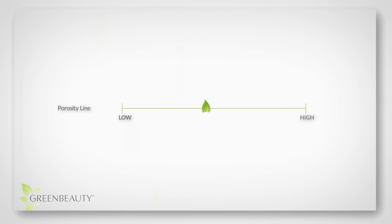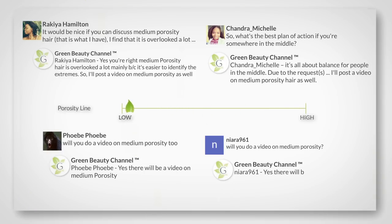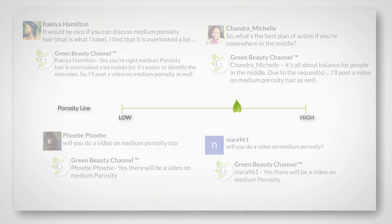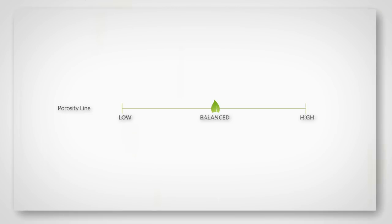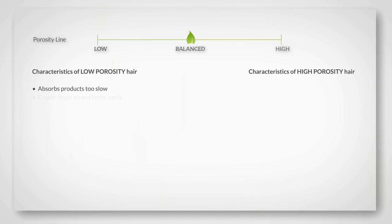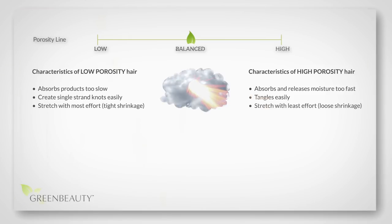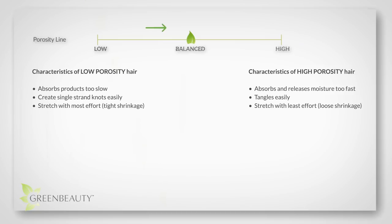When we talk about porosity, we tend to focus on extremes. But according to a handful of comments, a lot of you notice that you fit characteristics from both the high and low porosity groups. So I think it's important to go over medium or balanced porosity hair types. For length retention, the medium section of this chart is pretty much the goal. Naturally high porosity hair types can only achieve this temporarily with a consistent regimen that helps to reinforce weak cuticles. And low porosity hair types can become medium by gradually increasing their porosity without causing too much damage.